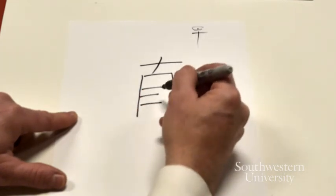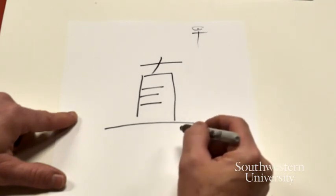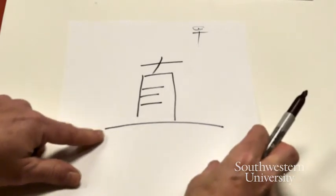But remember, this is an extra line in here. And then heng, zhe, sometimes it's called straight, but I think it's better to say continuous.